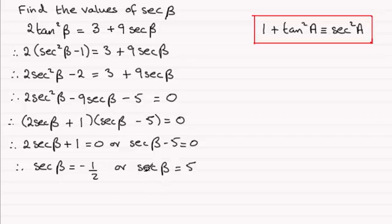Now you've got to be very careful here, because it's easy to think that you've just got both answers for secβ here. It actually does say find the values of secβ, but there is only one. Because when you look at this one here, secβ equaling minus 1/2, I'll show you. We'll just section this off here.